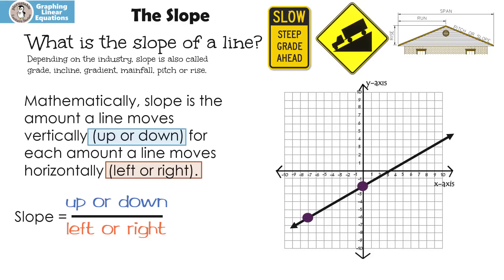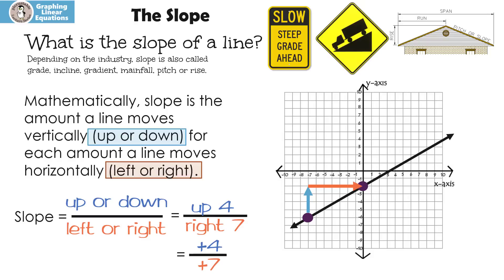Let's pick these two points. To figure out the slope between these points, I'm going to go up or down. In this case, I have to go up to get to the next point — I'm actually going up four. Then I have to go to the right — I'm going to the right seven. That means I'm going positive four and then positive seven. A positive over a positive is just a positive, so we could say the slope is four sevenths.